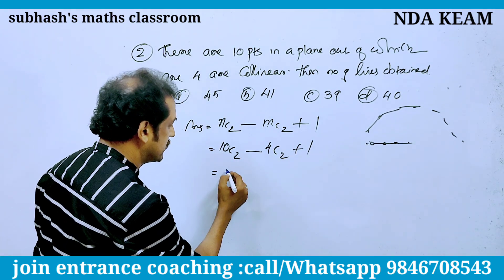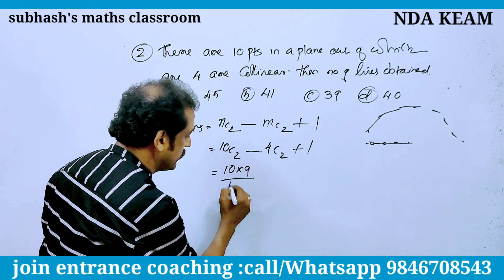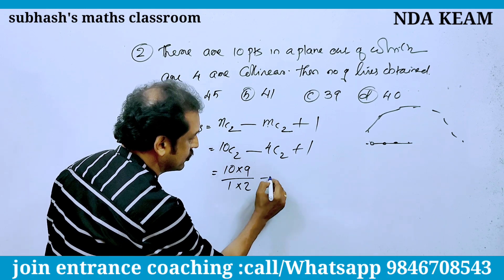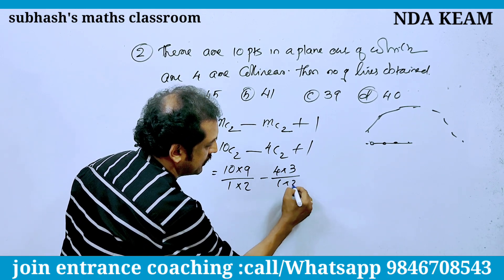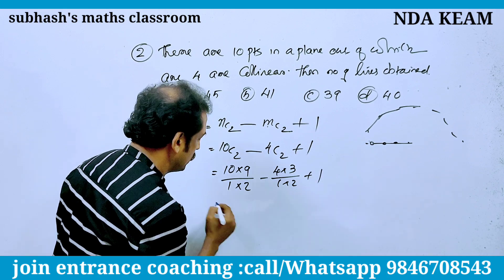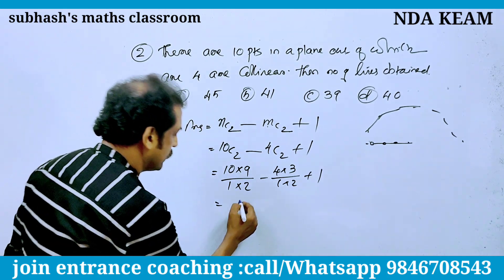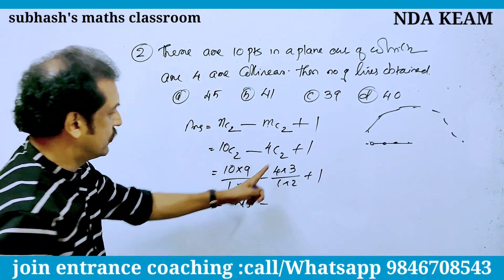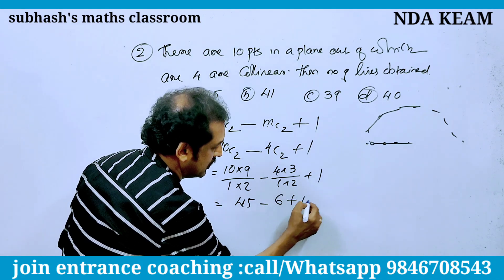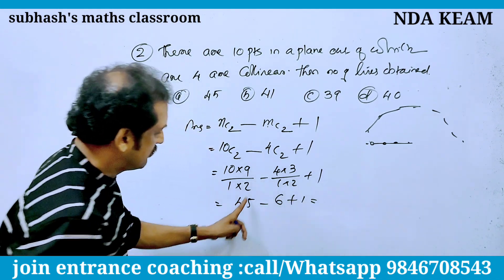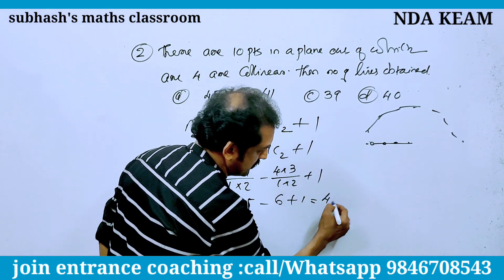10C2 = 10×9 divided by 1×2. 4C2 = 4×3 divided by 1×2 plus 1. Answer is 45 minus 12/2, minus 6 plus 1. That is 46 minus 6, answer is 40... final answer is 40.